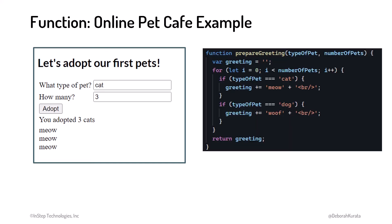We define a function for those instructions as shown here. We won't get into the specifics of the syntax of this code now. We cover JavaScript syntax in the Gentle Introduction to JavaScript for Beginners course. But you can get a general sense of what a function does. This one is named prepareGreeting. To perform its set of instructions, it needs the type and number of pets, which we pass in here.